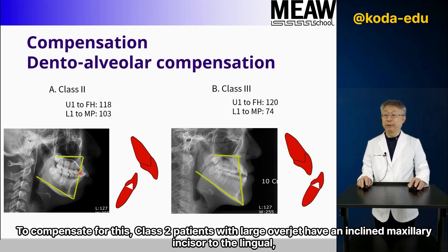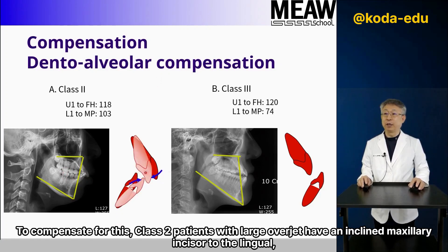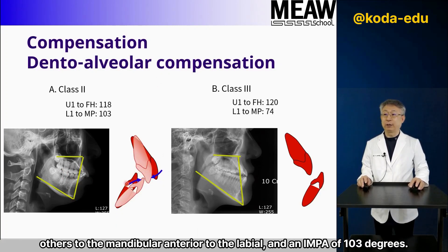To compensate for this, Class 2 patients with large overjet have the maxillary incisor inclined to the lingual, the mandibular anterior to the labial, and an IMPA of 103 degrees.